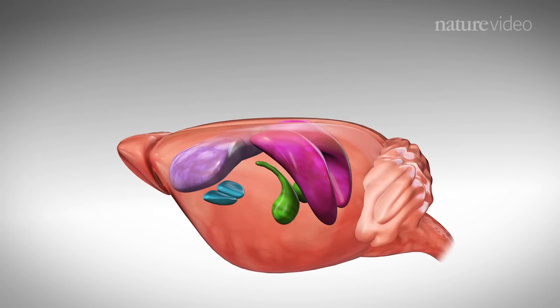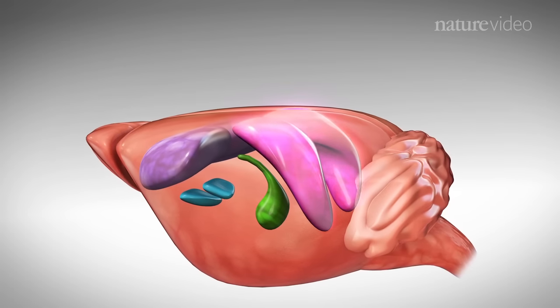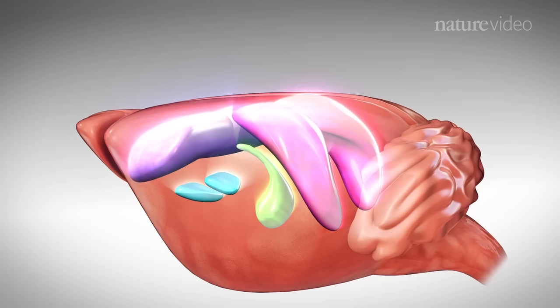Mouse studies have also shown altered neuronal plasticity in various brain regions, including the hippocampus, prefrontal cortex, amygdala and nucleus accumbens.